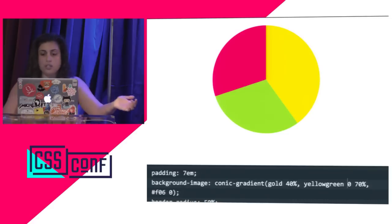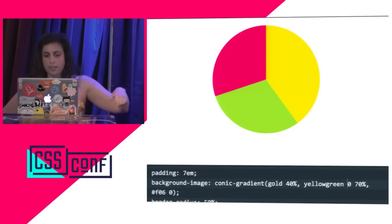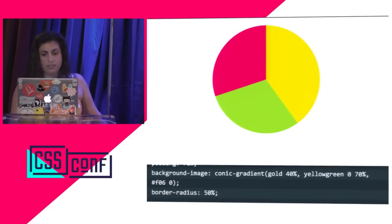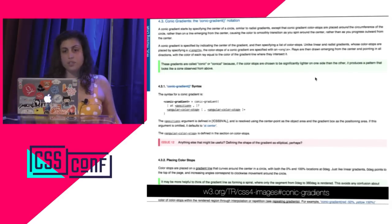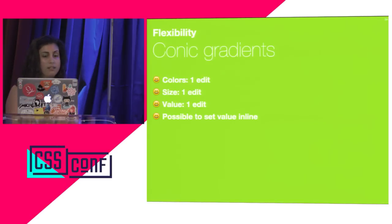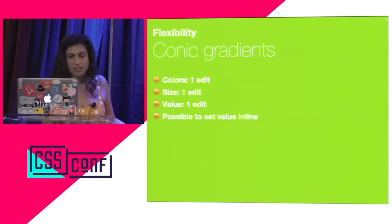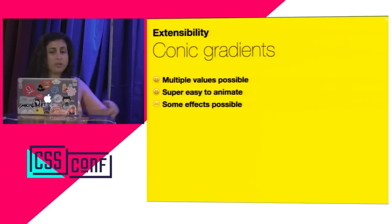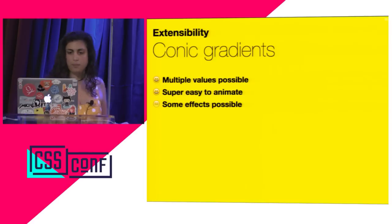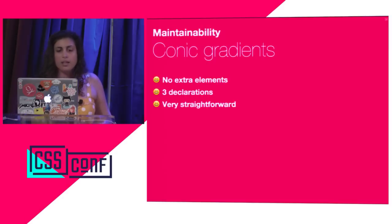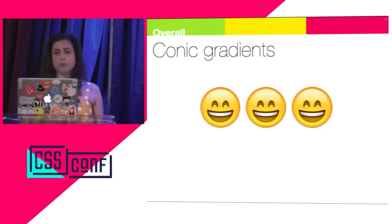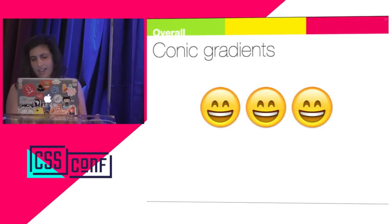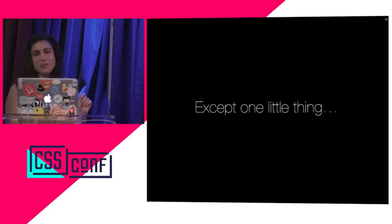I want to change the colors in one place. I want to change the percentages in one place. How much code? Three lines. They're defined in CSS Image Values Level 4. Pretty much one edit to set anything — I can set the value inline by just overriding the gradient, I can have multiple values, it's obviously easy to animate, no extra elements, only three declarations, super straightforward. Conic gradients are pretty awesome.